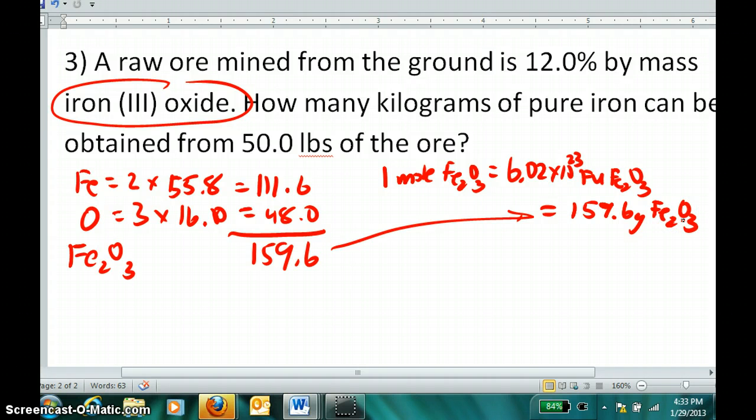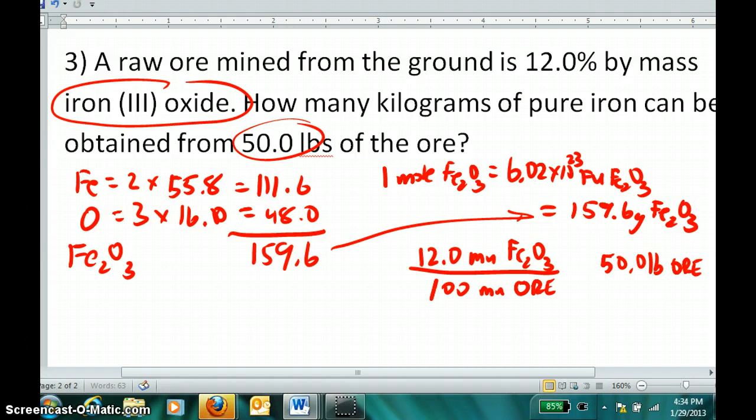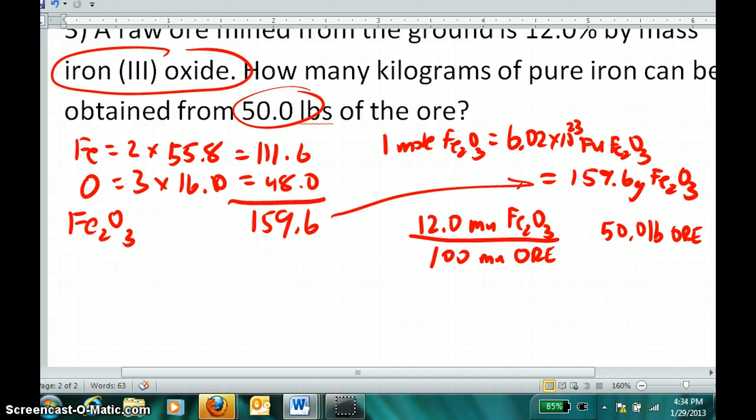I say to myself, what other information am I given in this problem? And actually, quite a bit. It says a raw ore is 12% by mass iron(III) oxide. So I immediately write this ratio: there are 12 mass units of iron(III) oxide for every 100 mass units of ore. And then I'm also given this right here, namely a mass of ore, 50.0 pounds of ore. And when I do my number-units-label type problem, I like to start with the answer. I ask what quantity is being requested. In this case, kilograms or units of mass, they want a mass of pure iron.